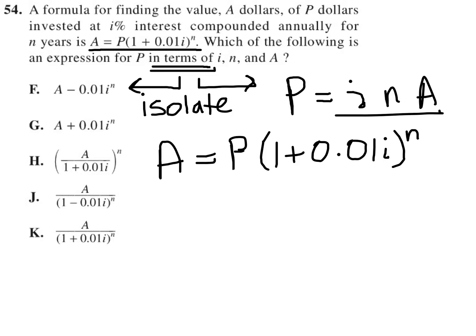So how do we get P isolated? Well, it's actually fairly simple. If I want P alone, I can simply divide by this 1 plus 0.01I to the N because that'll cross out, leaving P all by itself.